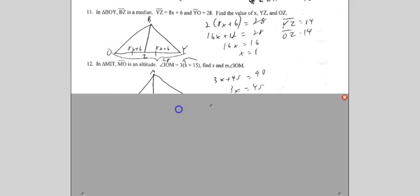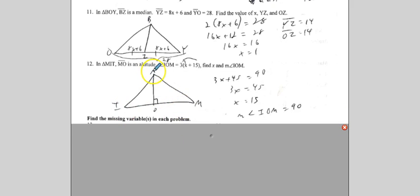Number 12, MIT. So MIT. Oops, I labeled that wrong. This should be a T right here. Because here's MO, my altitude, which is a 90-degree angle on the base right here. So IOM right here is 90-degree angle. These are both 90-degree angles. So I distributed the 3 right away and set it equal to 90. These are very easy because you solve for X, and there's no work to do here because you already know it's 90 by definition. Hit pause if you need to at any point.